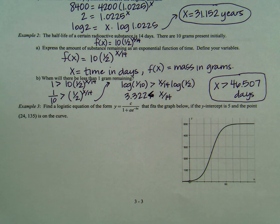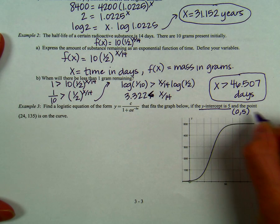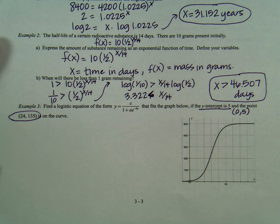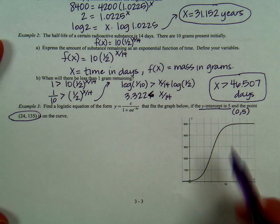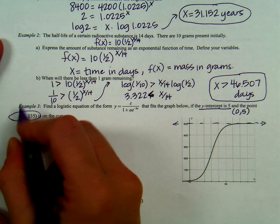Number 3. It says find the logistic function equation of the form y equals c over 1 plus a times e to the negative bx that fits the graph below. If the y intercept is 5 and the point 24, 135 is on the curve. So first, let's look at this equation for a second. We know that the y intercept is 5. That means we go through the point 0, 5. We also know we go through the point 24, 135. We're going to use both of those values to determine our equation.